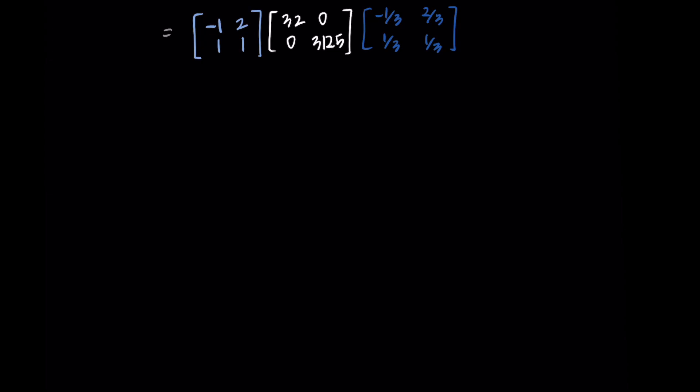I'll start with the leftmost matrices. I'm getting negative 32 plus zero, and zero plus 6,250. That's my first row. Then in the second row, I'm getting 32 plus zero, and zero plus 3,125. This simplifies to [-32, 6250; 32, 3125]. We just need to do this next multiplication. These numbers are going to get pretty big, but that's okay.